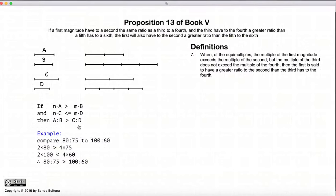So again, this is the definition. A quick example: if we're comparing the ratio 80 to 75, comparing it to the ratio 100 to 60, 2 times 80 is greater than 4 times 75, yet 2 times 100 is less than 4 times 60. Therefore, the ratio 80 to 75 is greater than the ratio 100 to 60.